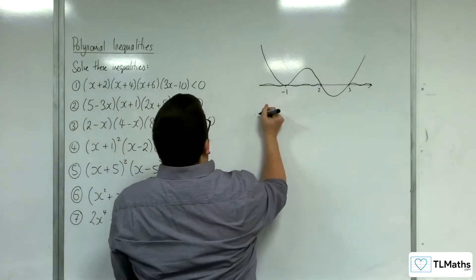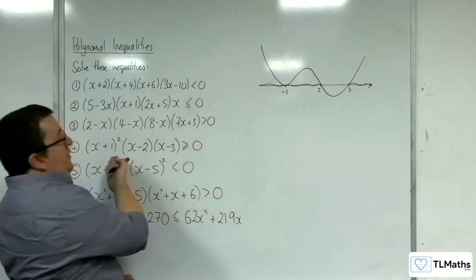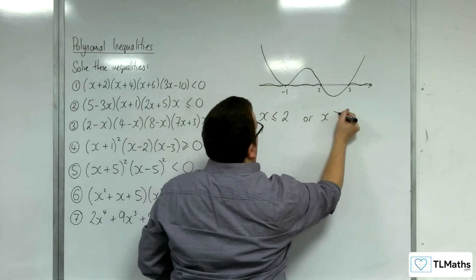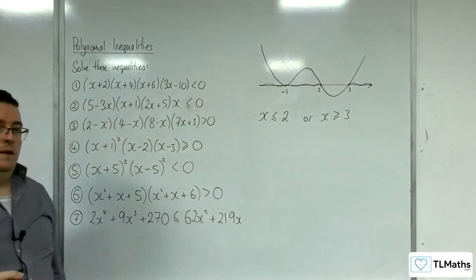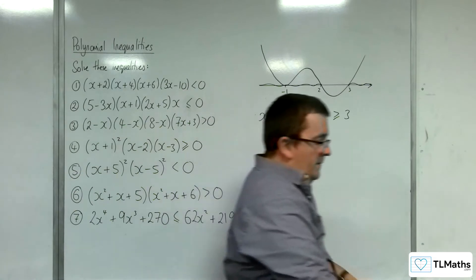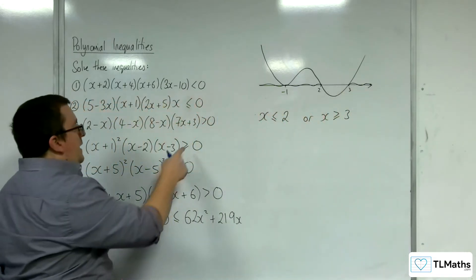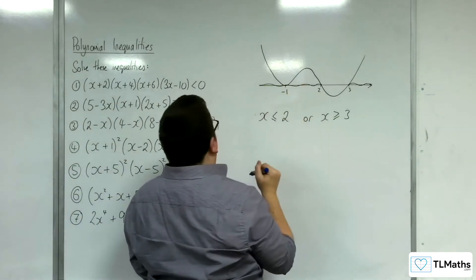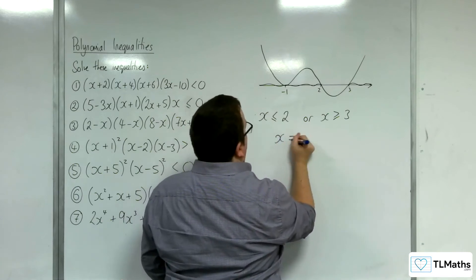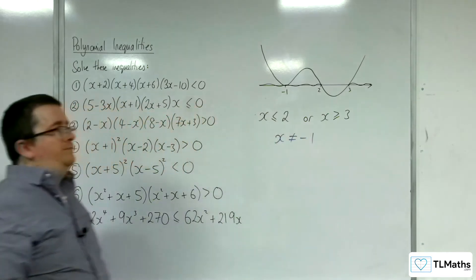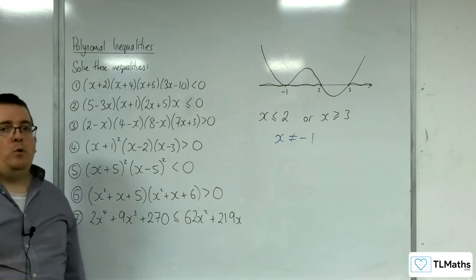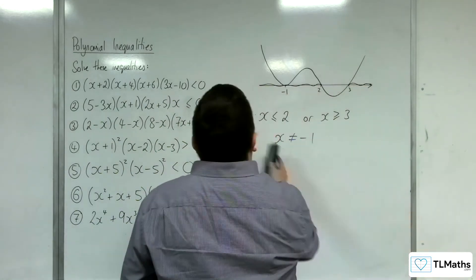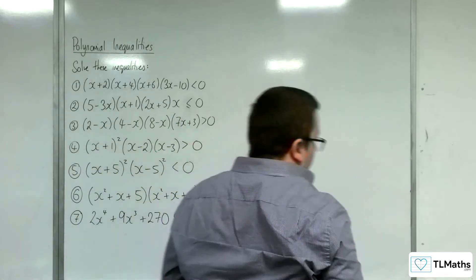So for this, the answer is: x is less than or equal to 2, or x is greater than or equal to 3. As an addendum — if it had been just greater than 0, then x is not equal to minus 1 would need to be identified as not part of the solution set. That was number 4.